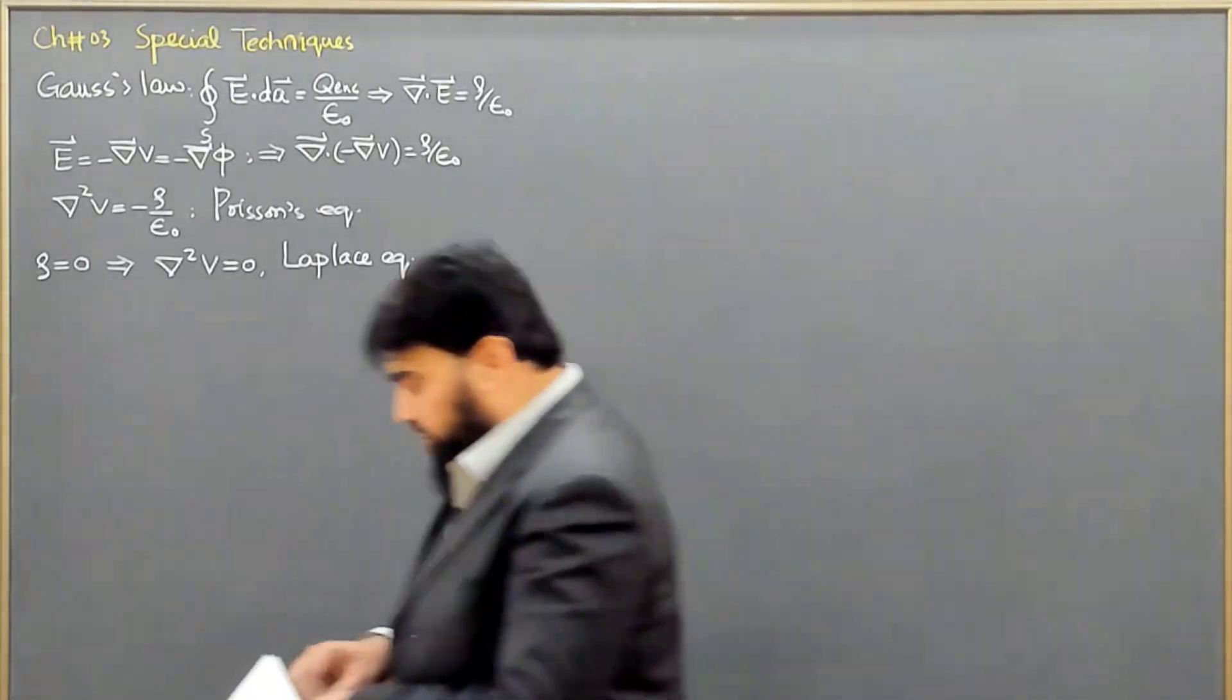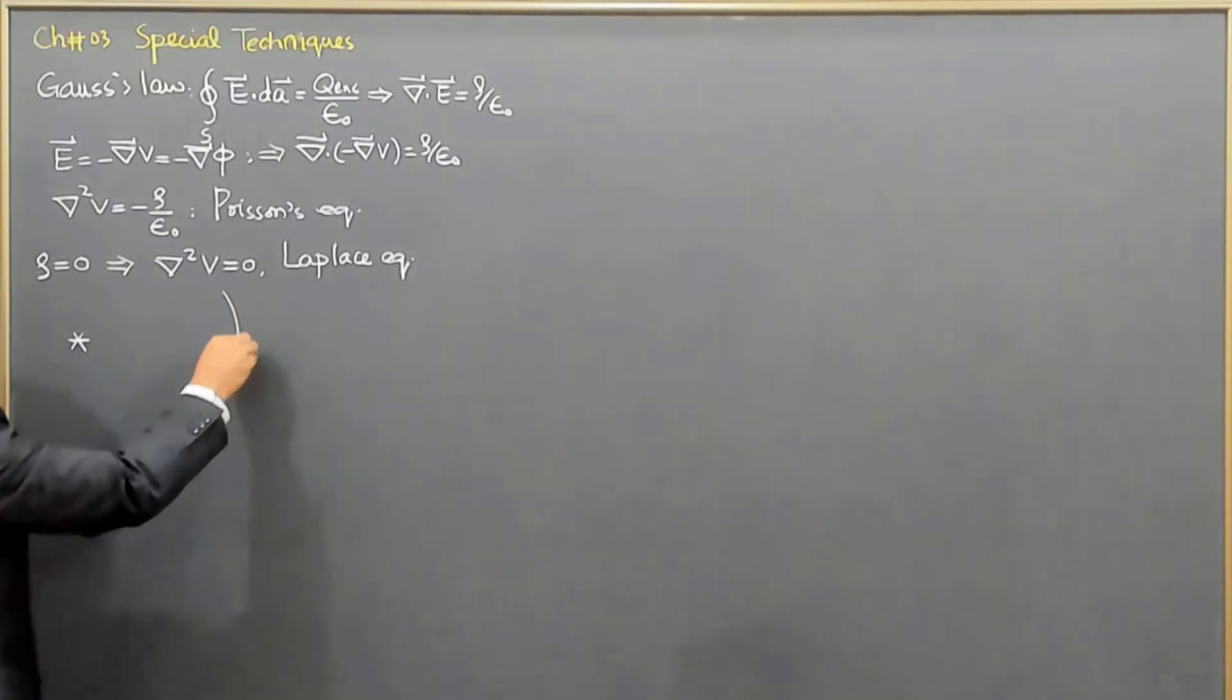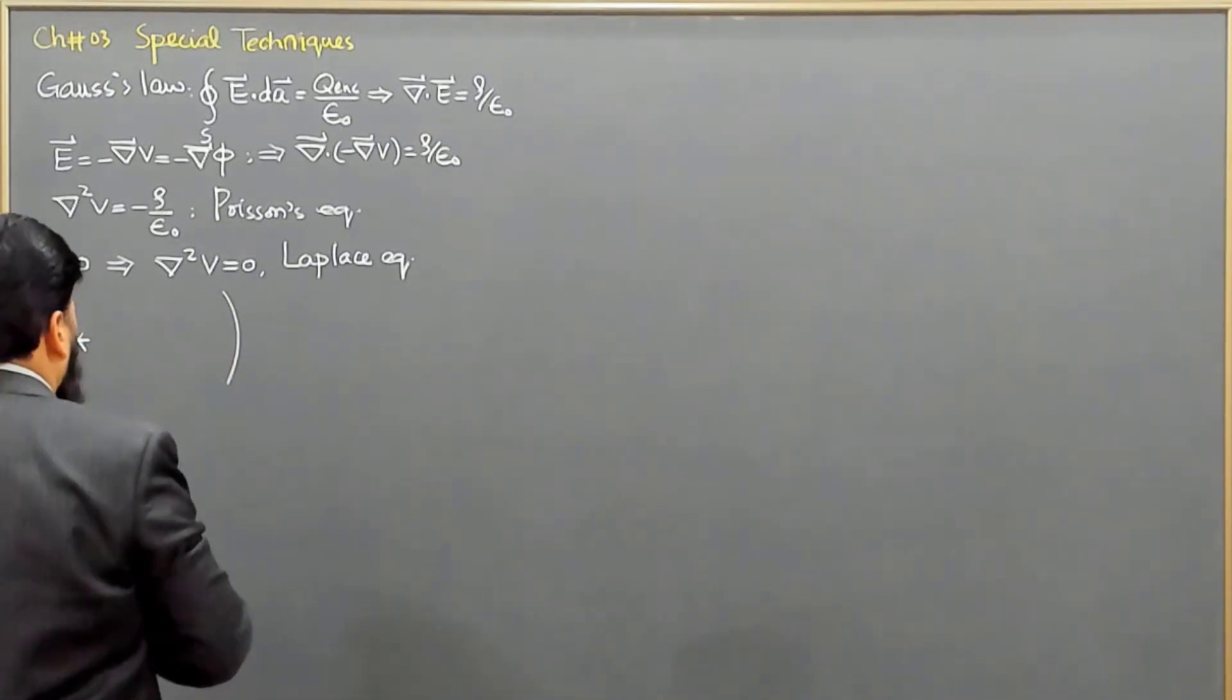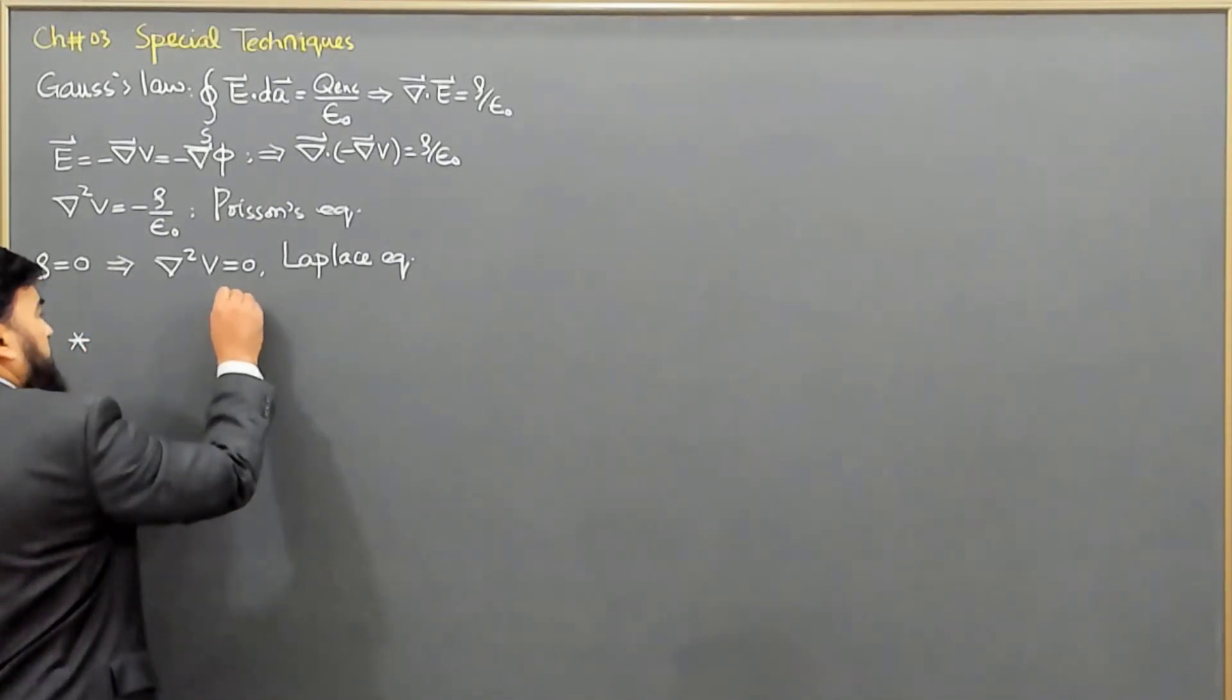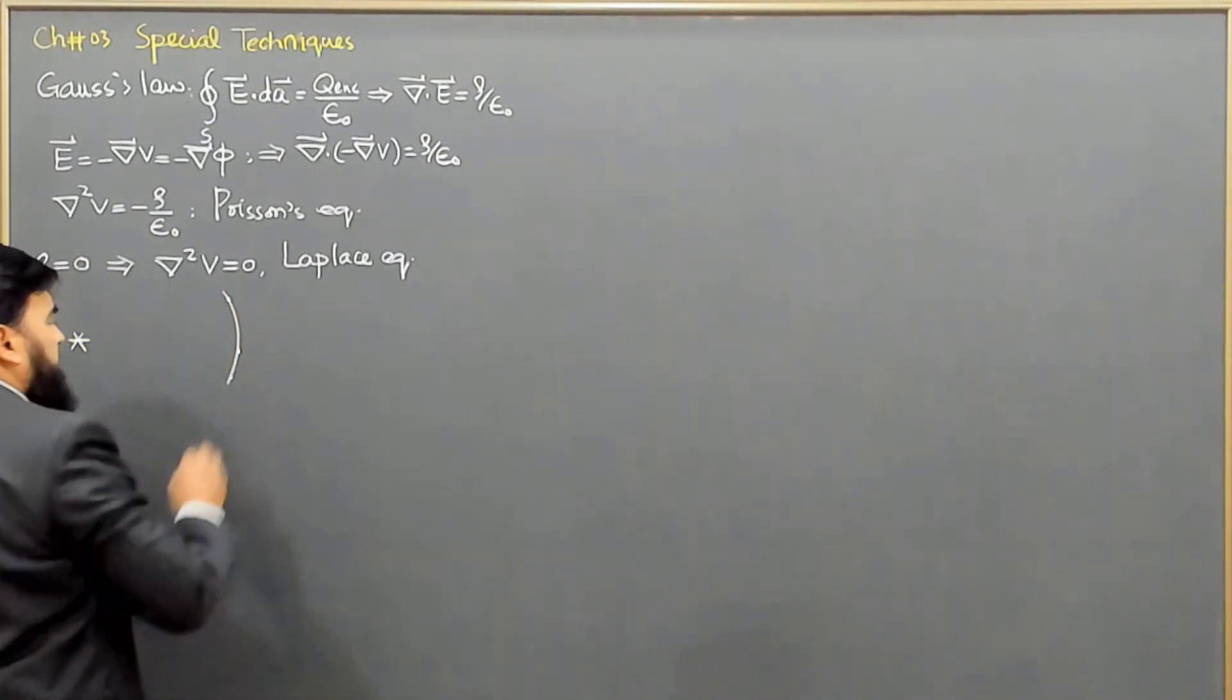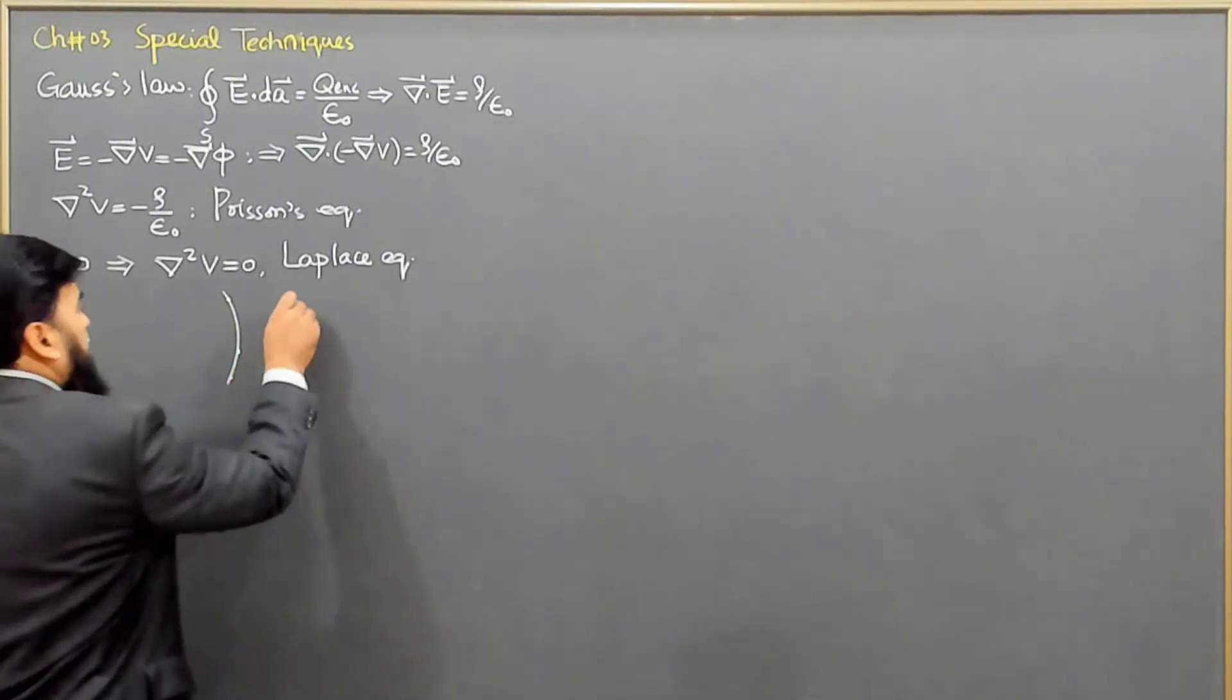So, let me first explain to you that what is meant by the boundary conditions, or what is the uniqueness theorem. If, for example, we are having a source somewhere, and there is a boundary we are having. Now, on this boundary, we say that the potential means we, on this boundary, if this boundary is equidistant from the source,